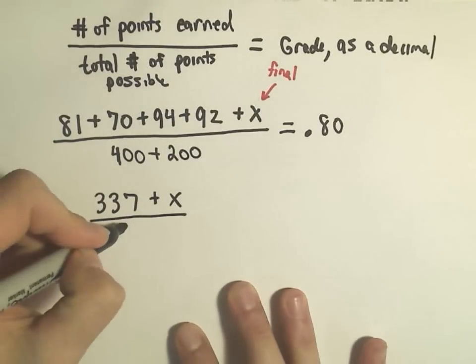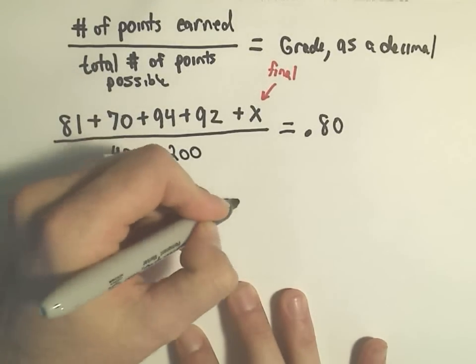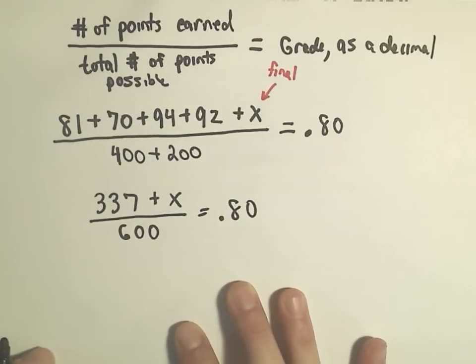Well, 400 plus 200, that's 600, equals .8 or at least an 80%.